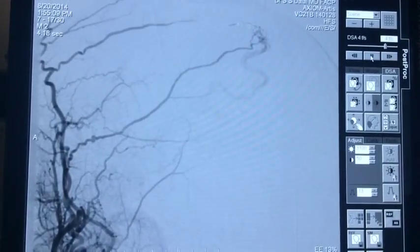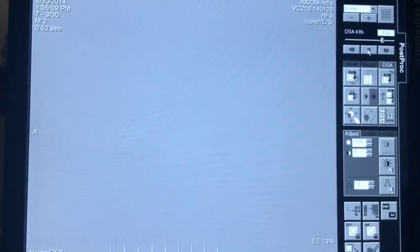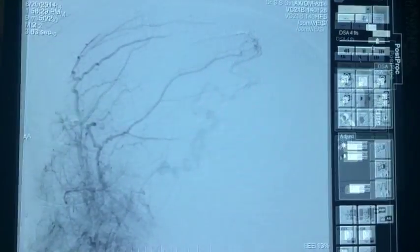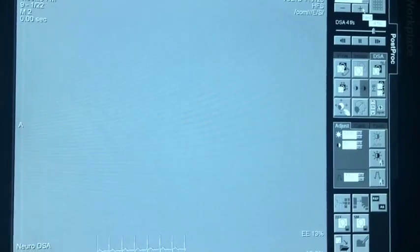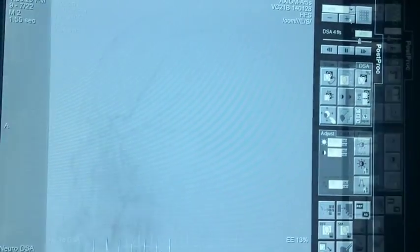But the fistula continues to fill from the middle meningeal artery. So we continue to inject Onyx on this patient. This is an oblique projection which shows the fistula still filling from the middle meningeal artery. We will try to embolize that.